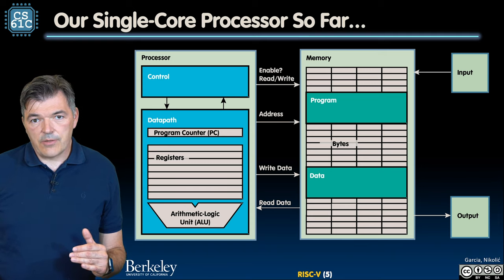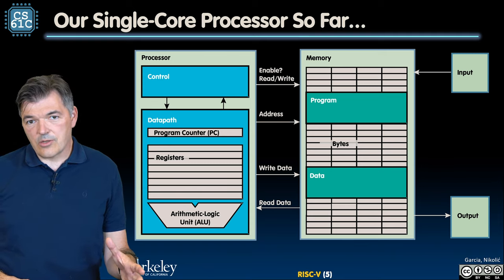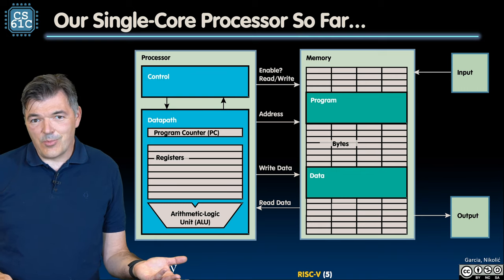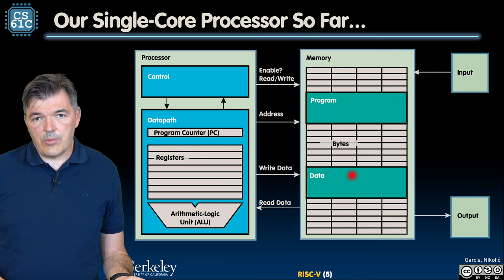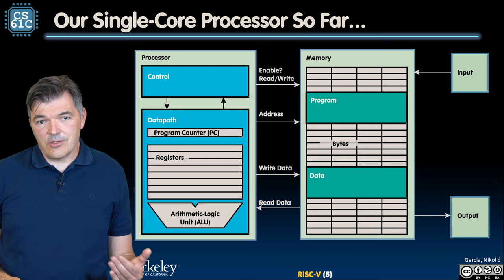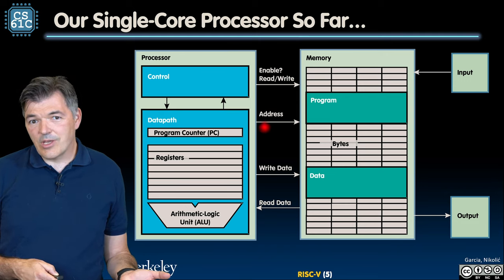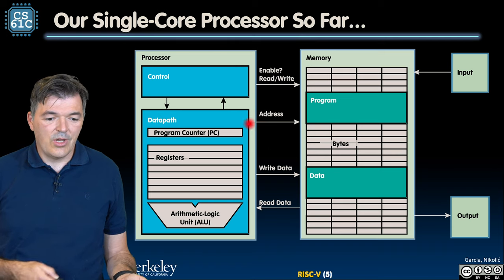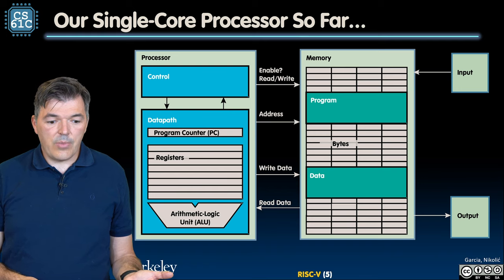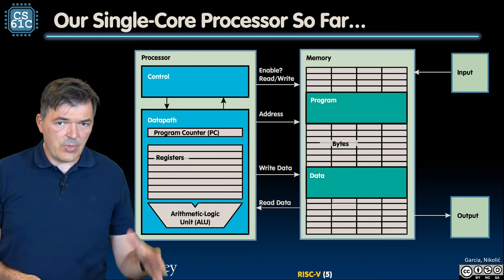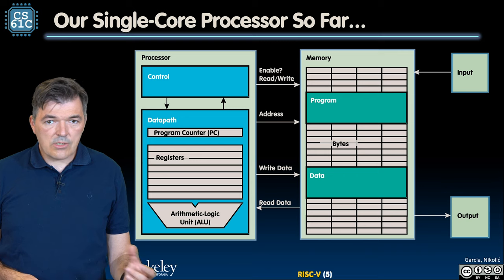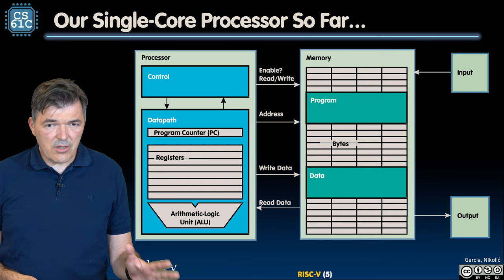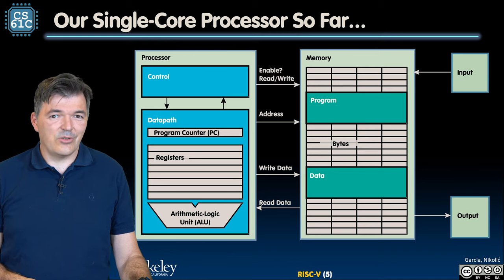Our microprocessor so far has been a single-core microprocessor, though we can have multiple cores operating in parallel. In our single-core model, we have the processor, memory, and input and output connected together. Inside the processor there are two main parts: control and a data path. Inside the data path we have registers, a special one being the program counter, and the arithmetic logic unit as the most common functional unit.